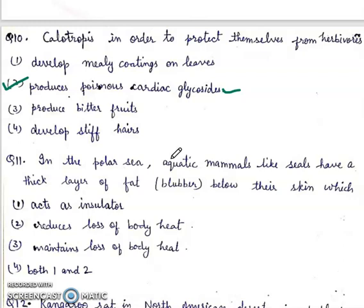Eleventh question: in the polar sea, aquatic mammals like seals have a thick layer of fat blubber below their skin which first acts as insulator; second, reduces loss of body heat; third, maintains loss of body heat; fourth, both 1 and 2. Right answer will be fourth, both 1 and 2.